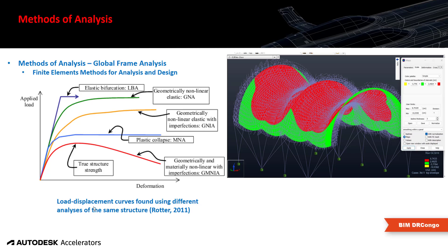This is another graphic illustrating applied load versus deformation for structural design. When we design a shell structure and perform structural analysis, there are criteria you can verify to define the behavioral range your structure belongs to — including pre-critical strength, geometrical nonlinearity, and material nonlinearity.